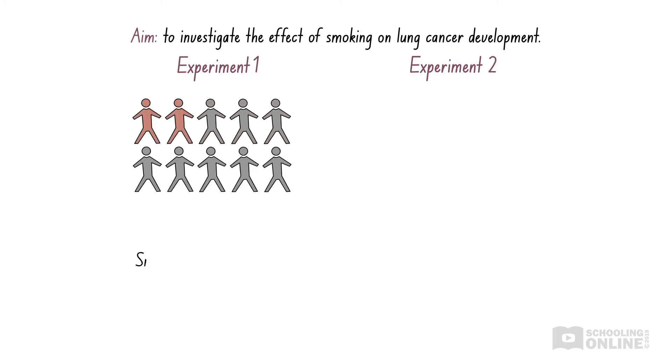For example, consider two different experiments that are trying to investigate whether smoking causes lung cancer. The first experiment has a sample size of 10 smokers and finds that two smokers get lung cancer, which corresponds to a probability of one in five. This isn't very convincing, since only two people were affected. This could have been due to chance or other factors, such as their diet.